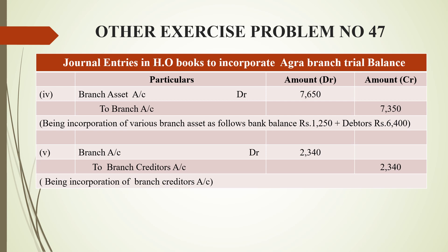The last entry is for creditors: branch account is debited and branch creditors account is credited, because creditors are still inside the branch and we need to pay them. The narration reads: being incorporation of branch creditors account. Regarding goods in transit, in this problem it will be a cash and goods in transit entry, and that is why we proceed to the journal entry accordingly.